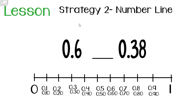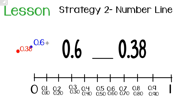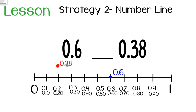Our next strategy is using a number line. In this example we compare 6 tenths to 38 hundredths. We set up our number line from 0 to 1 and break it into tenths, labeling both tenths and hundredths. First I plot 6 tenths. Then I plot 38 hundredths — it falls between 3 and 4 tenths, closer to 4 tenths. Looking at the number line, the number further to the right is the larger decimal. 6 tenths is further right, so 6 tenths is greater than 38 hundredths.